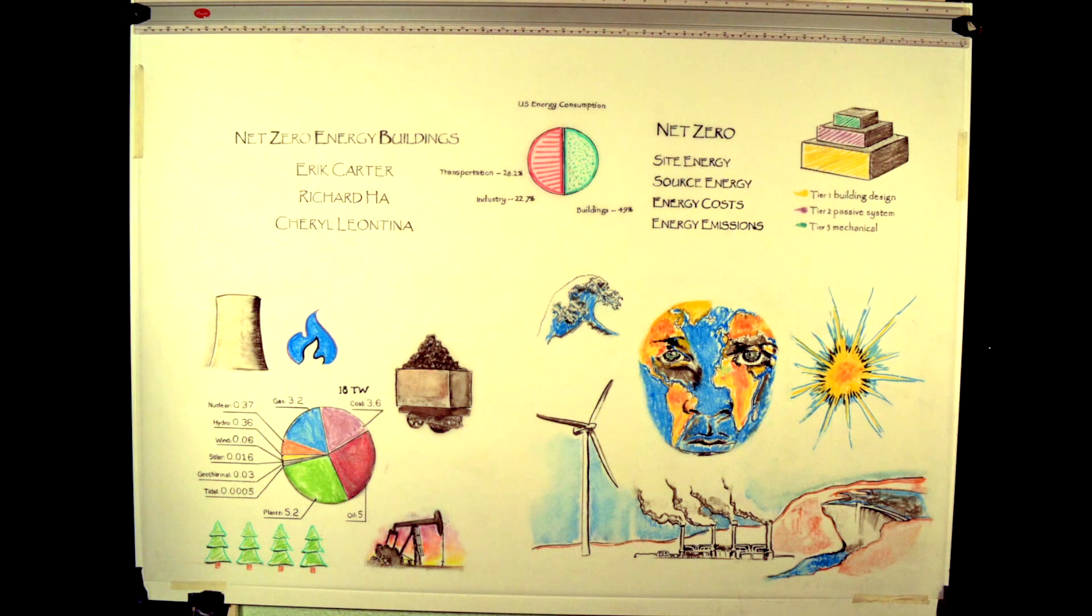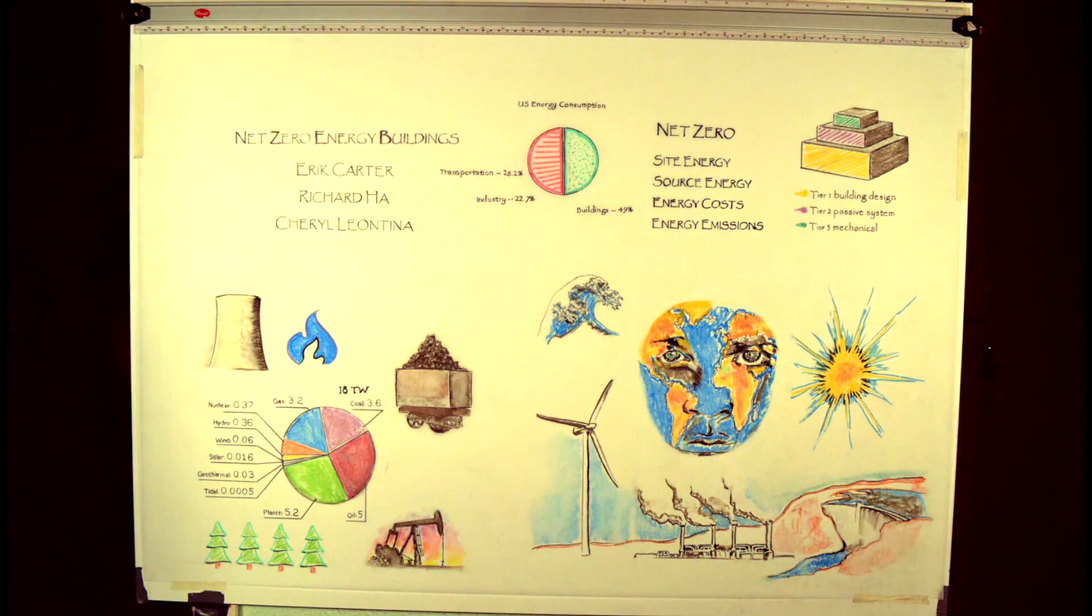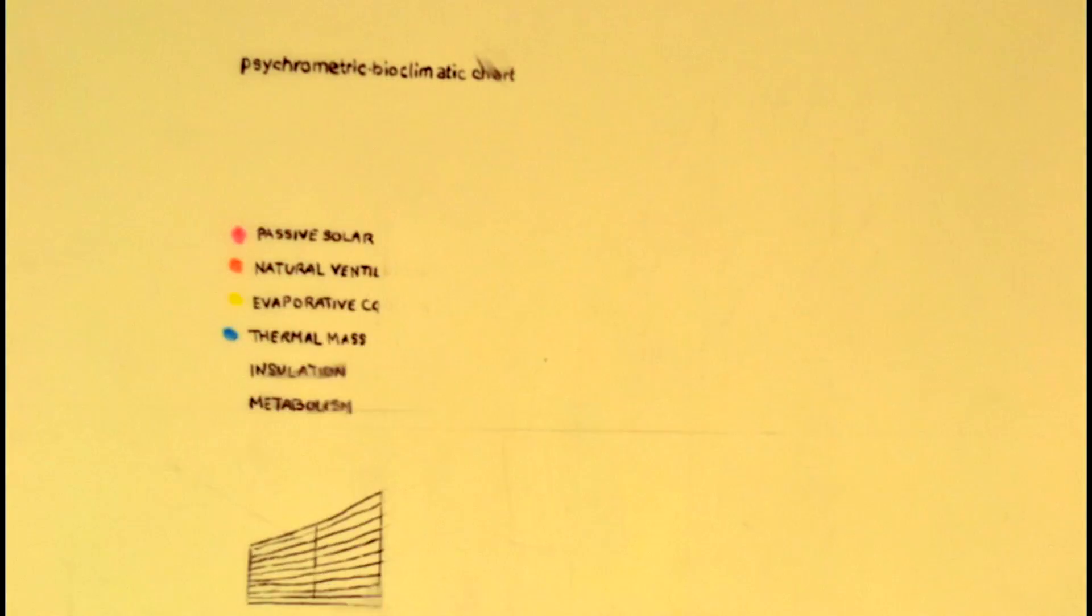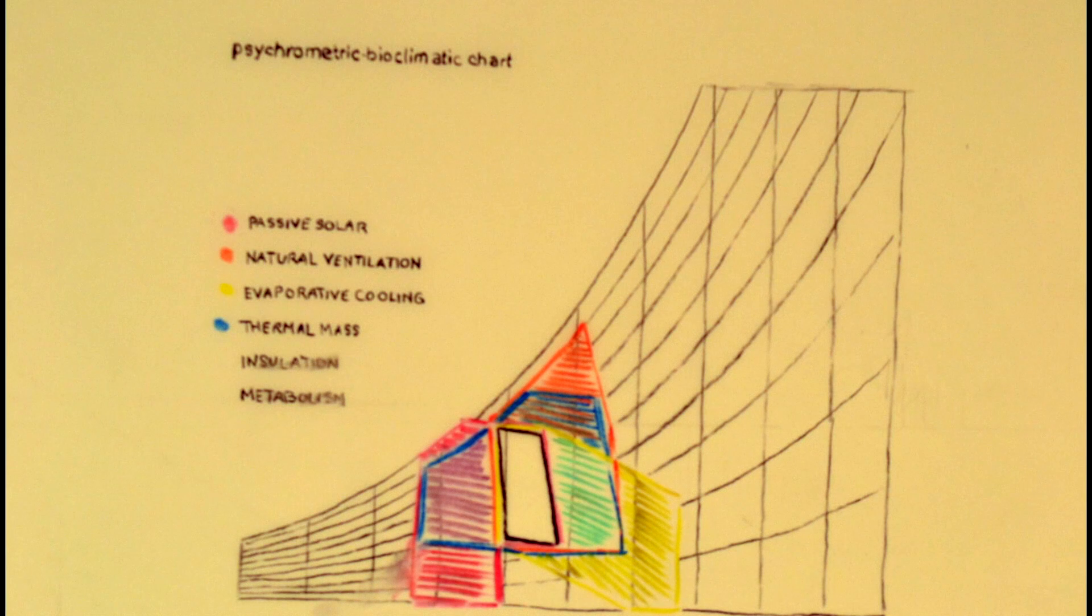The single most important consideration when designing a net-zero energy building is the climate conditions of the site's geographic location. A psychometric chart is a tool that recommends types of passive systems appropriate to include in a building's design.